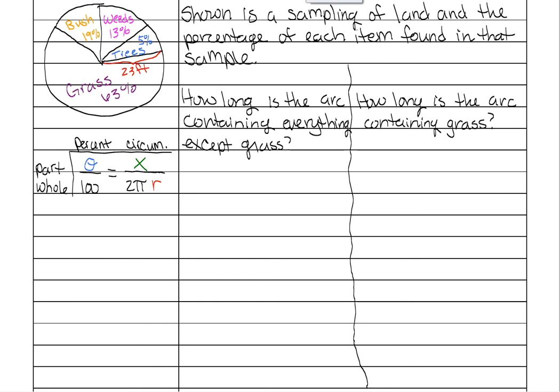So as you can see, we're going to set up the problem very much the same. So the first problem says, how long is the arc containing everything except for grass? So that means how long is all of this? So we just put it into the problem. But first, we need to figure out exactly what our percentage is.